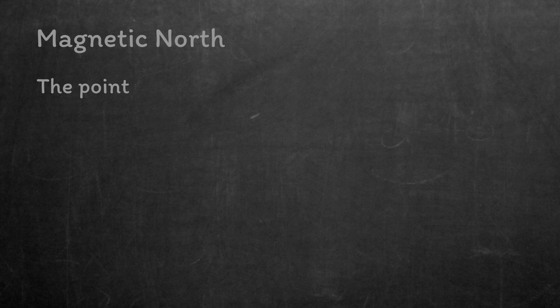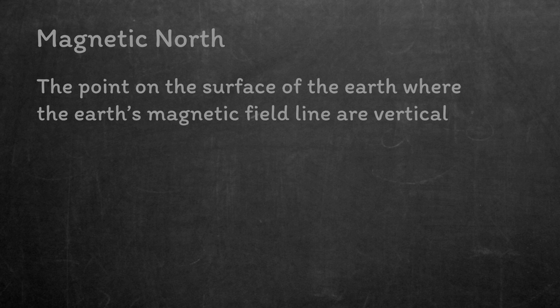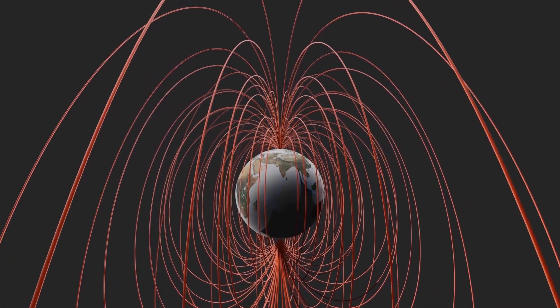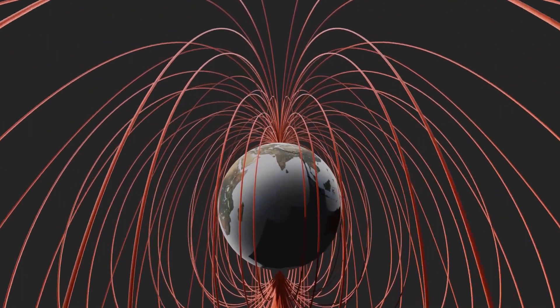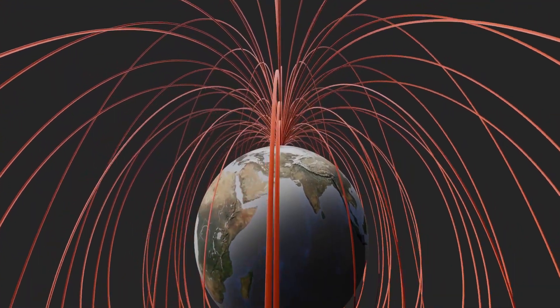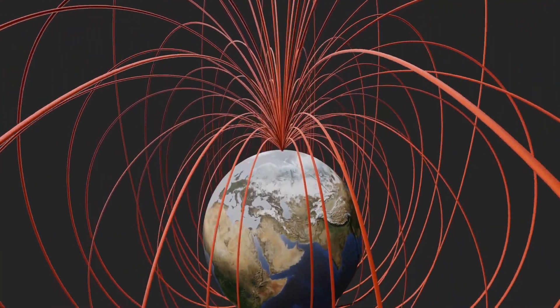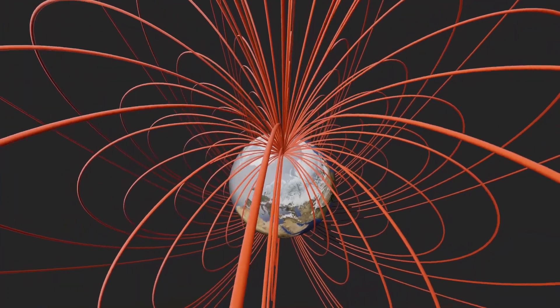Magnetic North is the point on the surface of the Earth where the magnetic field lines are vertical. A compass needle, without any other external influences, should align itself with the Earth's magnetic field lines. Obviously, if you follow these lines all the way to the North Pole, you will reach the Magnetic North Pole.